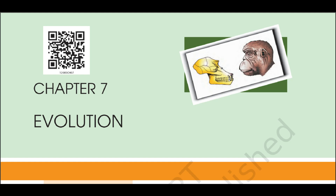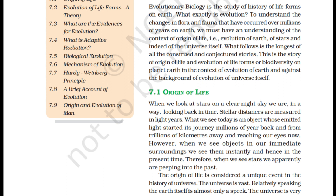Chapter 7: Evolution. Evolutionary biology is the study of the history of life-forms on Earth. What exactly is evolution? To understand the changes in flora and fauna that have occurred over millions of years on Earth, we must understand the context of the origin of life — that is, the evolution of Earth, of stars, and indeed of the universe itself. This is the story of origin of life and evolution of life-forms, or biodiversity, on planet Earth.